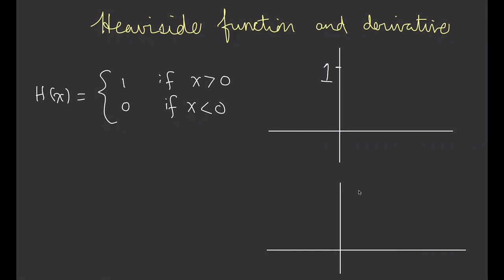I'd like to look at the Heaviside function just a little bit more. The Heaviside function, if you remember, we defined this as a function which just jumps up. It's zero if x is less than zero, and it's one if x is greater than zero. If we try to plot what this looks like, for values greater than zero it's going to be one, and for values less than zero it's going to be zero — something like that. That's a graph of what this function looks like.